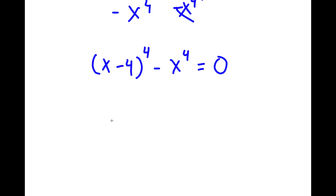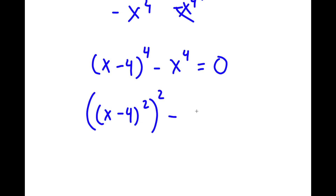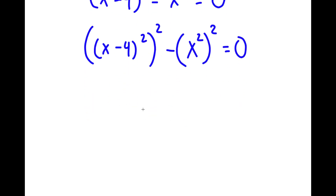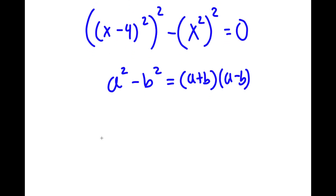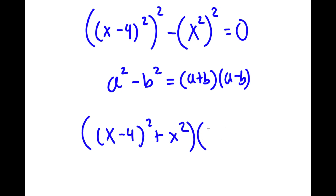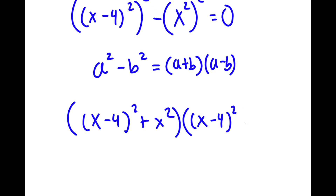Now I'm going to rewrite x minus 4 to the power of 4 as x minus 4 squared, to the power of 2. Now I have this minus x squared to the power of 2 is equal to 0. Since I have something in the form a squared minus b squared, this equals a plus b times a minus b. So I'm going to have x minus 4 squared plus x squared times x minus 4 squared minus x squared is equal to 0.